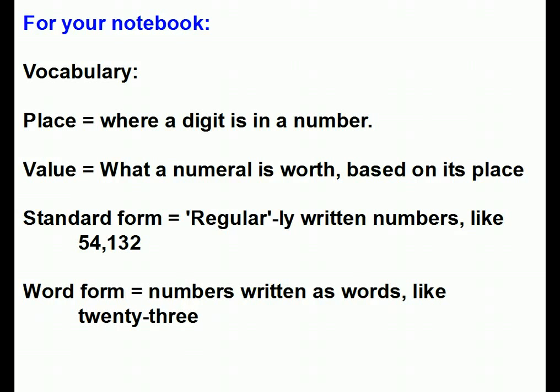Value means what a number is worth based on its place. In other words, a six in the hundreds place has a value of 600, and a four in the thousands place has a value of 4,000. Next, what is standard form? It's numbers written regularly, like 54,132 — that's standard form.